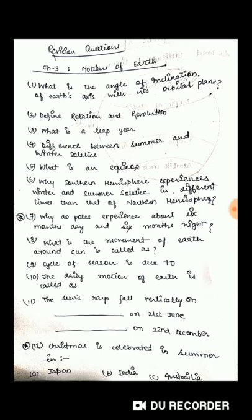Question 4: Difference between summer solstice and winter solstice. Question 5: What is an equinox? Question 6: Why does Southern Hemisphere experience winter solstice and summer solstice at different times than that of Northern Hemisphere? Question 7: Why do poles experience about six months day and six months night?